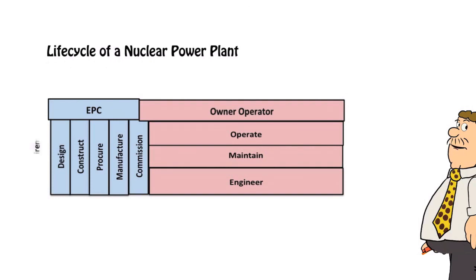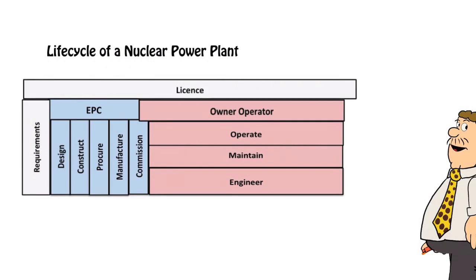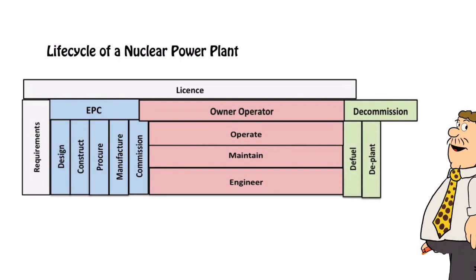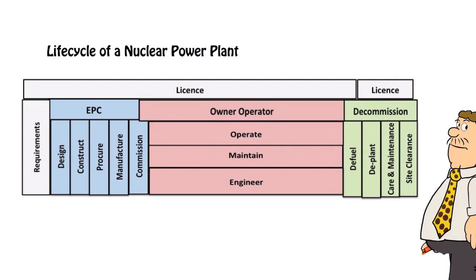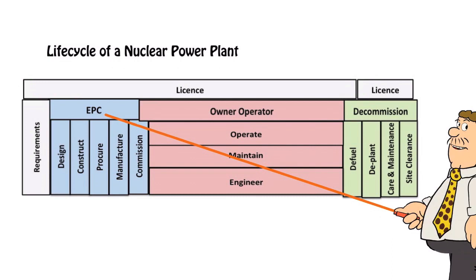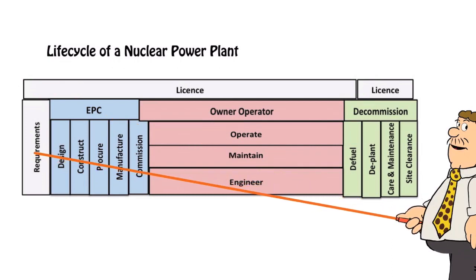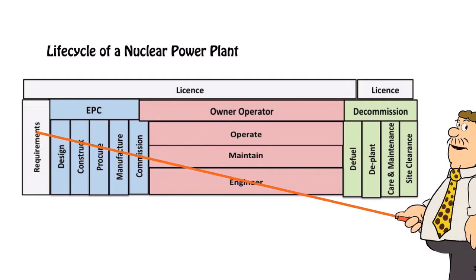Commissioning is often a joint effort with the operations group. Depending on the country and regulatory regime, there will be a set of requirements that must be met by the design and build process. After the end of operations, we move into decommissioning: defuelling, deplanting, a period of care and maintenance, and finally site clearance. This is a long-term life cycle — the operational life of a station may be 60 or more years, the build process 7 to 10 or more years, and decommissioning itself may take 100 years.